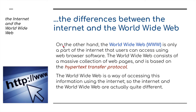On the other hand, the World Wide Web (WWW) is only a part of the internet that users can access using web browser software. The World Wide Web consists of a massive collection of web pages and is based on Hypertext Transfer Protocol, HTTP. The World Wide Web is a way of accessing information using the internet — so the internet and the World Wide Web are actually quite different.